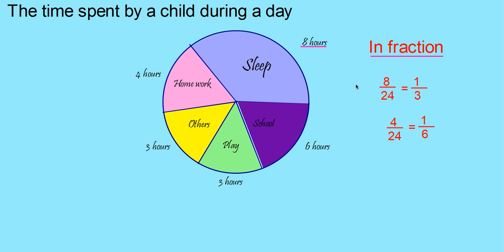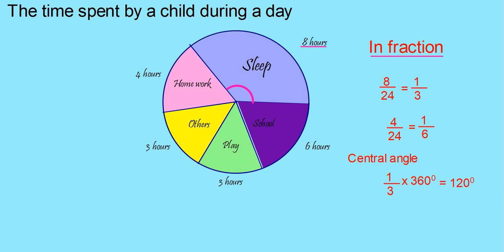To draw a sector, we need an angle. This angle we can call the central angle. In a circle, the whole measure is 360 degrees. Here, 1 by 3rd of it is sleep. So its central angle is 1 by 3 into 360, which equals 120 degrees.